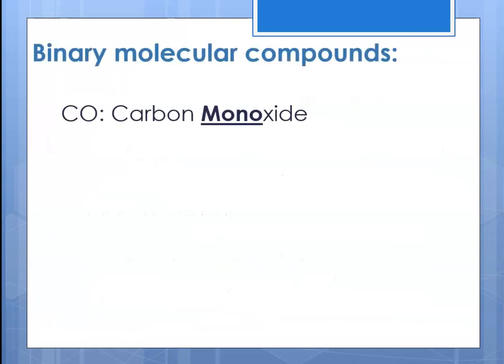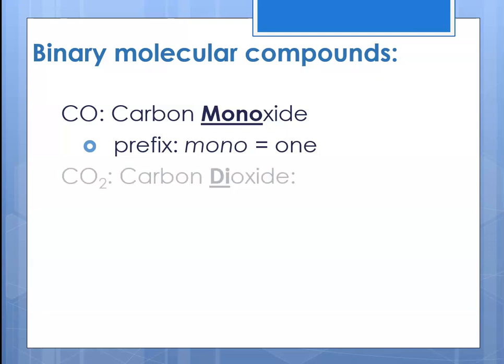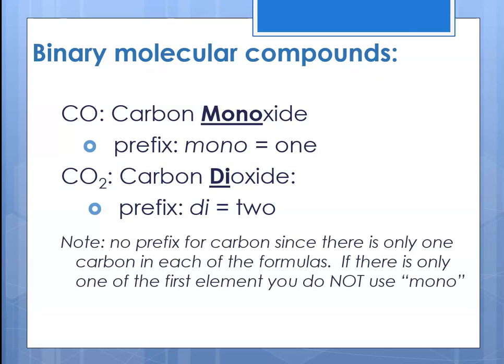If we have the formula CO, that is carbon monoxide — the prefix mono means 1. And CO2: the first element is carbon, just like it appears on the periodic table, and then di because there are 2, oxide — ox for oxygen, -ide because it's binary. Note: no prefix for carbon since there's only one carbon in each of these formulas. If there's only one of the first element, you do not use the mono prefix.